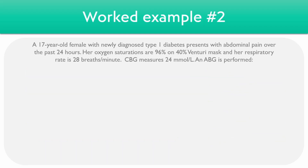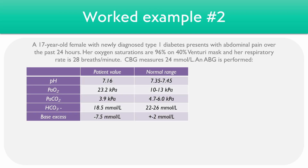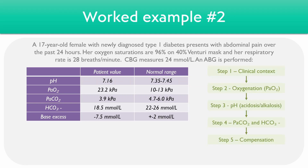Taking a look at another example: a 17-year-old female with newly diagnosed type 1 diabetes who comes in with abdominal pain over the past 24 hours. Her oxygen saturations are 96% on a 40% Venturi mask and her respiratory rate is 28 breaths per minute. A point-of-care glucose test measures 24 millimoles per litre. For step 1, analyzing the clinical context, we can see new type 1 diabetes, the patient is tachypneic, and has a high glucose level, so already we have some idea about what the diagnosis is going to be.